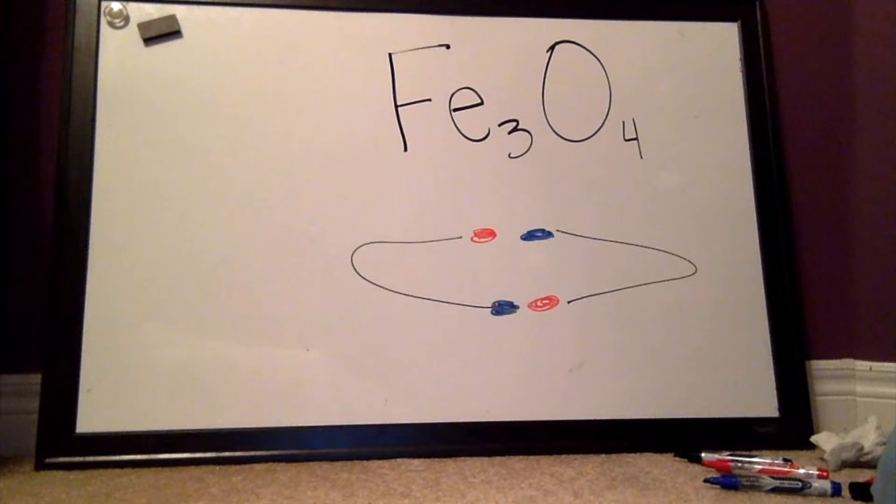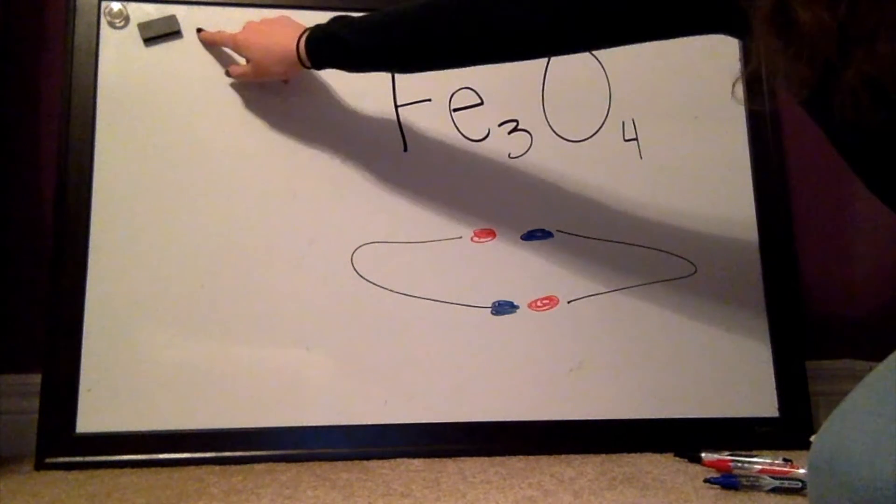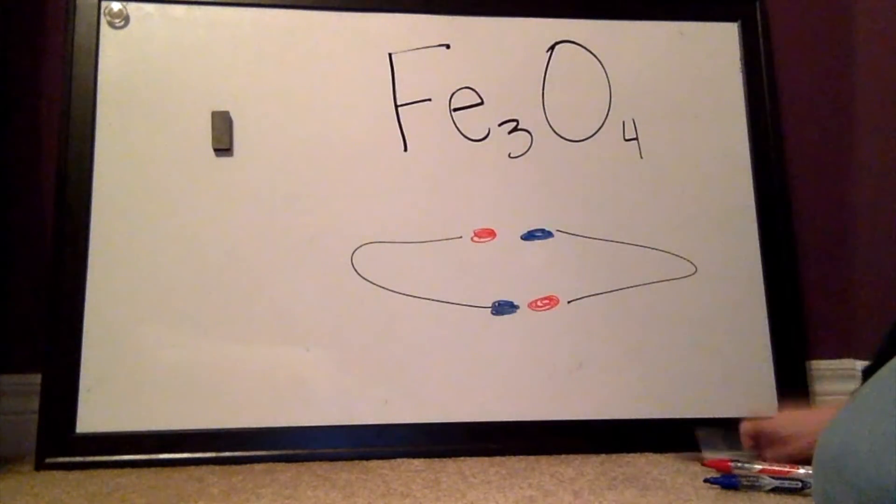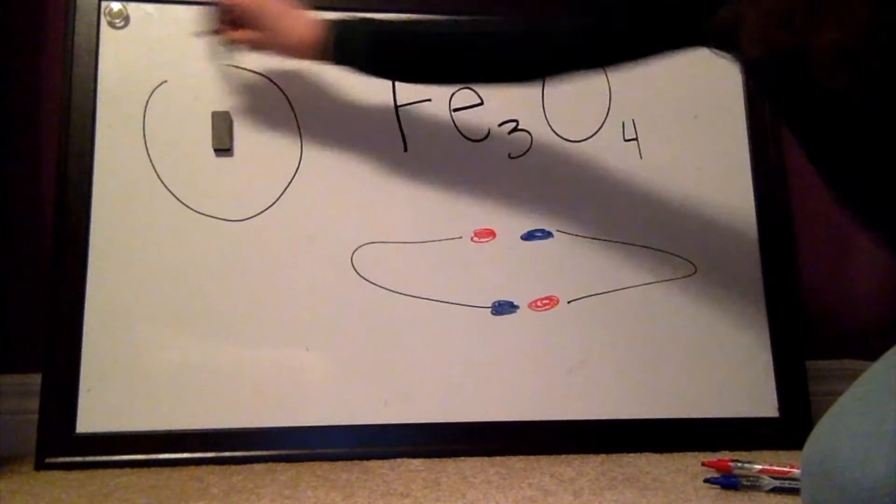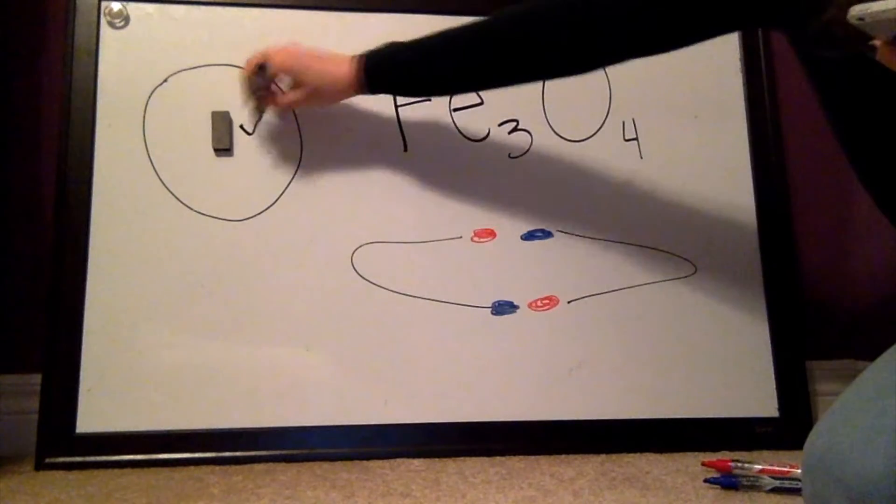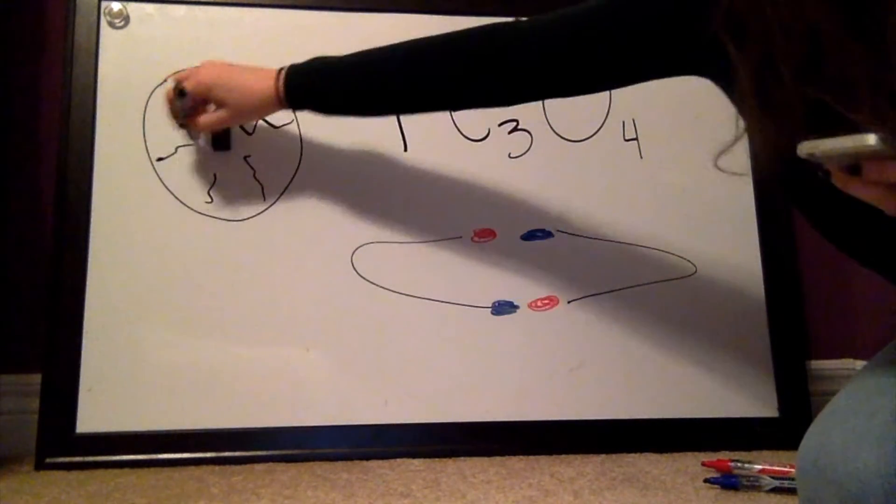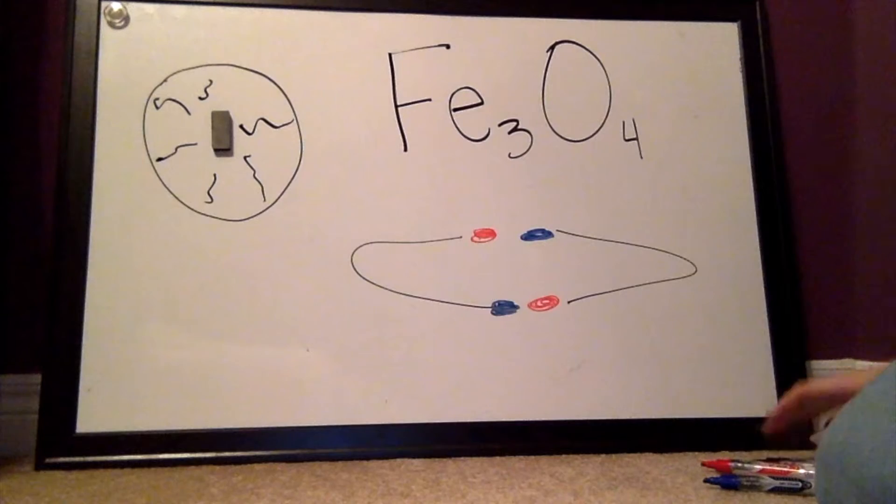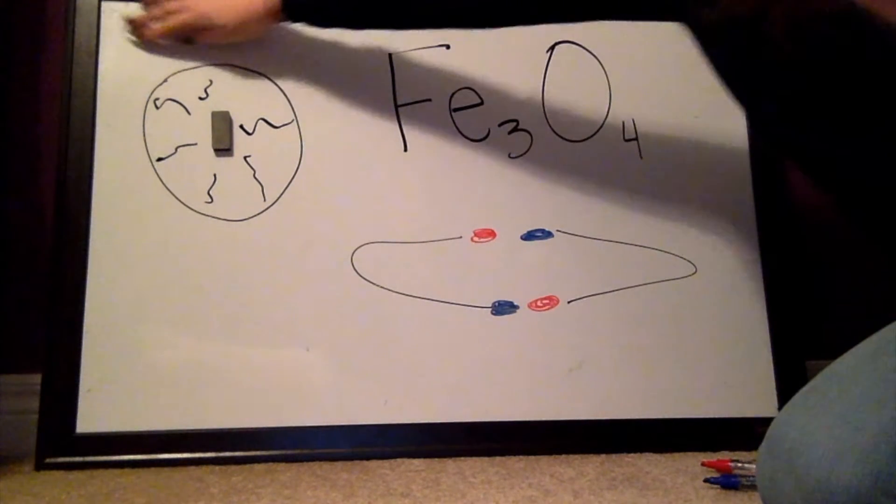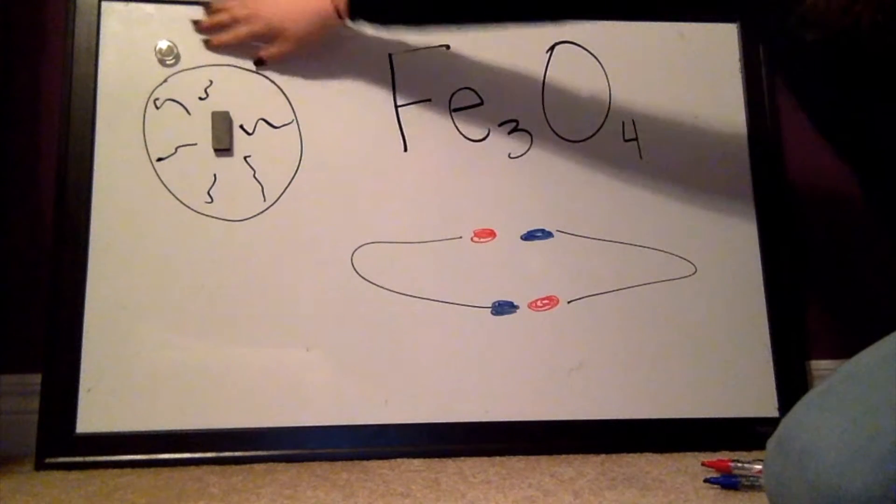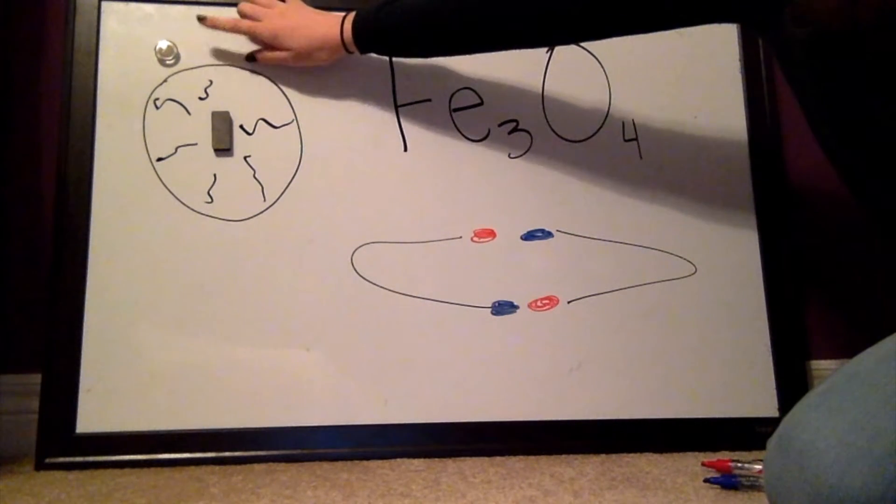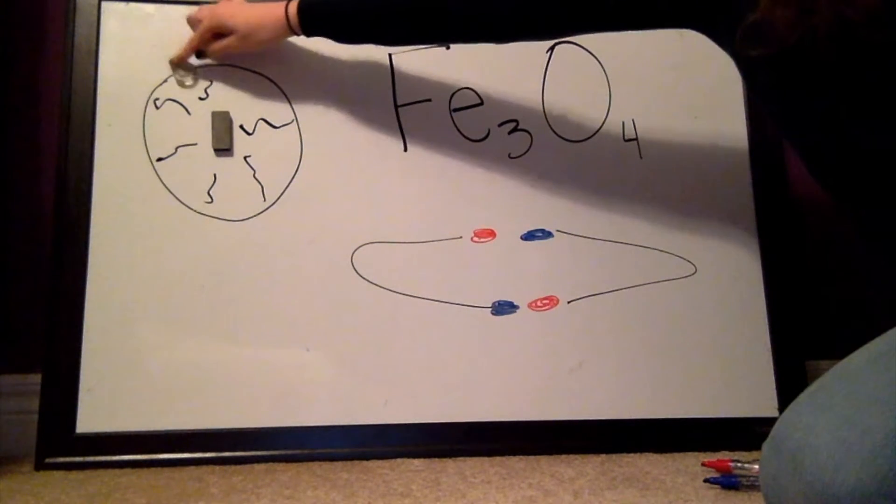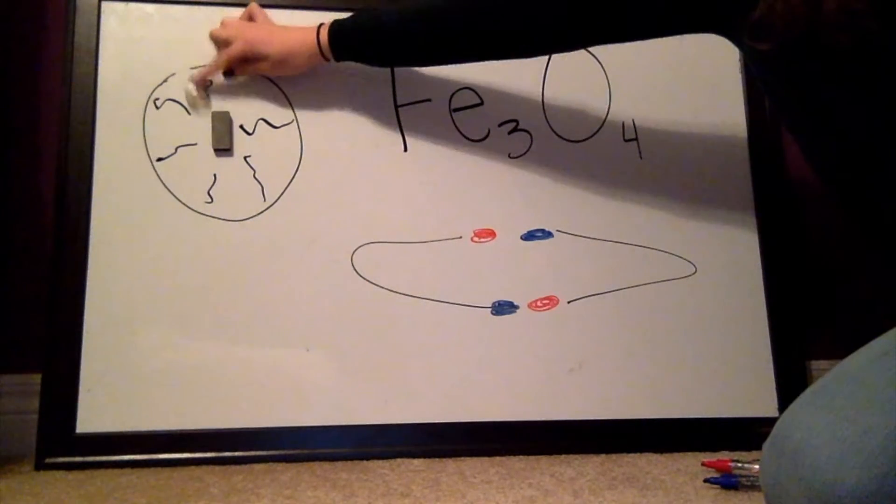A magnetic field is the area surrounding a magnet where the magnetic charge is present. Let's use this magnet for example. Let's say that this is this magnet's magnetic field, meaning that all of the area within the field is where the magnetic charge is active. Let's use this magnet to demonstrate: if we put it close to the magnetic field but not in it, it's not affected, whereas if we put it in the magnetic field, it'll be pulled towards the magnet.